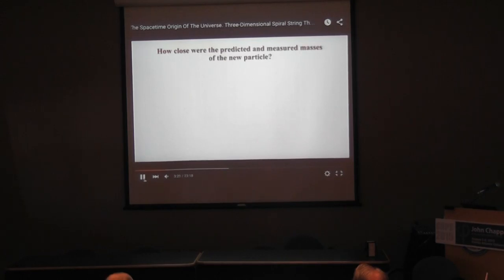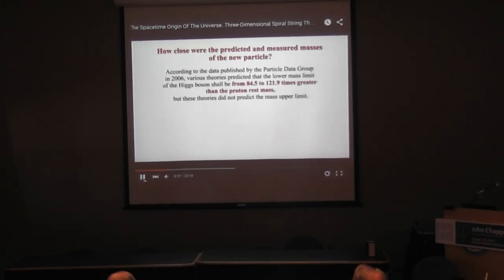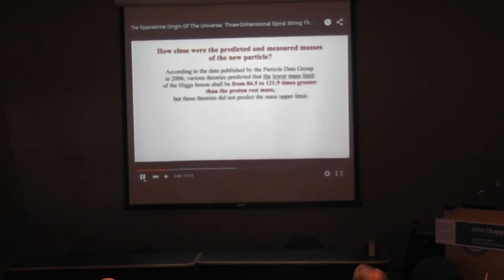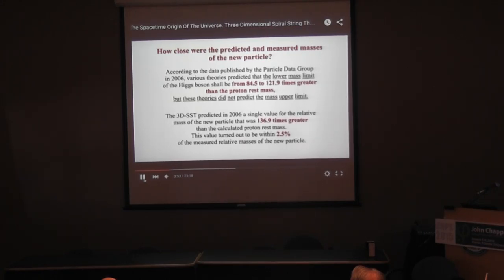How close were the predicted and measured masses of the new particle? According to data published by the particle data group in 2006, various theories predicted that the lower mass limit of the Higgs boson shall be from 84.5 to 121.9 times greater than the proton rest mass, but these theories did not predict an exact mass value. The 3DSST predicted in 2006 a single value of 136.9 times greater than the calculated proton rest mass — within 2.5% of the measured relative masses of the new particle.